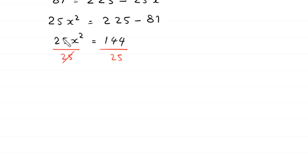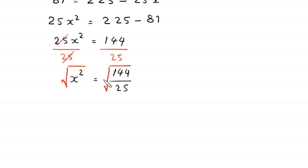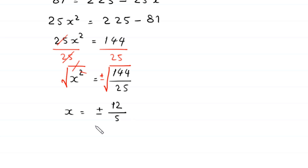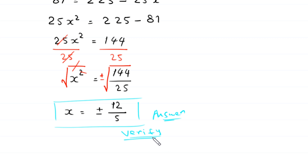The 25s cancel on the left, leaving x squared equals 144 over 25. Taking the square root of both sides, the square cancels with the square root, and we get x equals plus or minus 12 over 5, since square root of 144 is 12 and square root of 25 is 5. This is the final answer. Now let's verify by substituting back into the original equation.